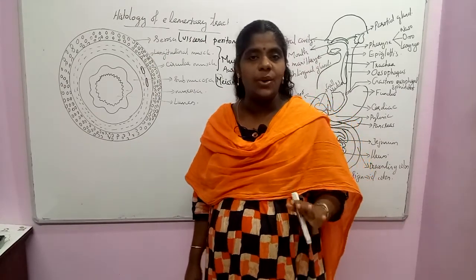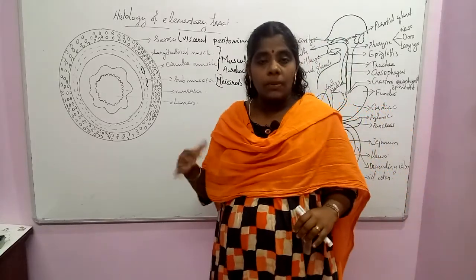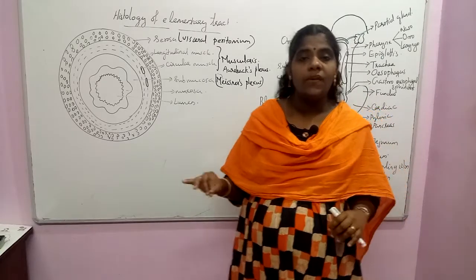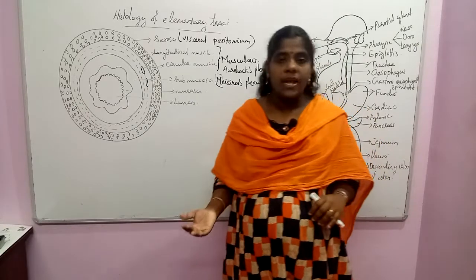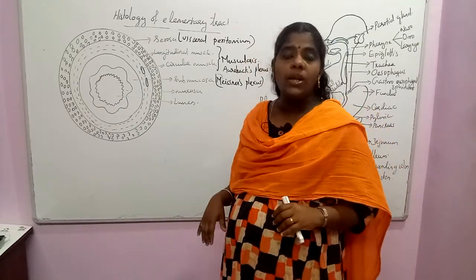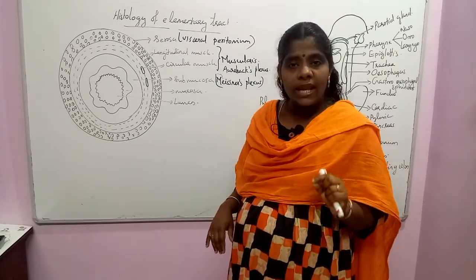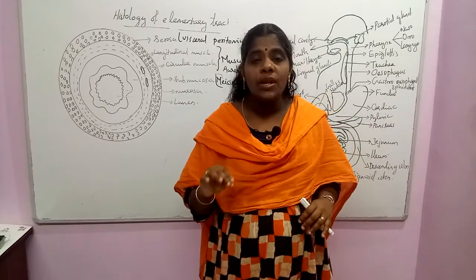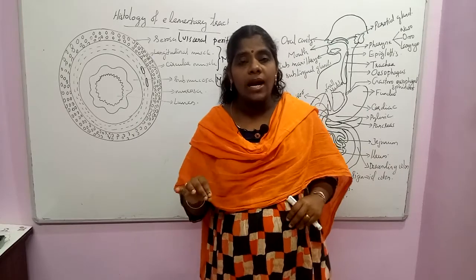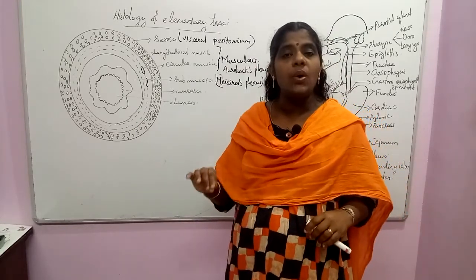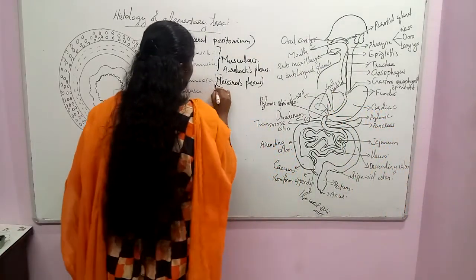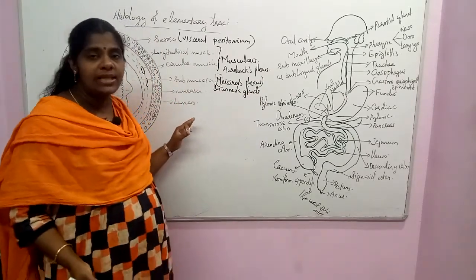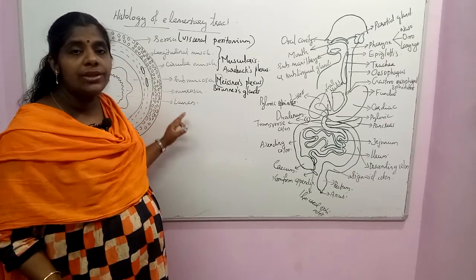The submucosal layer also has a supply of blood vessels. In the duodenum region — which is the first part of the small intestine — there are glandular cells in the submucosal layer. These are called Brunner's glands, which secrete mucus.